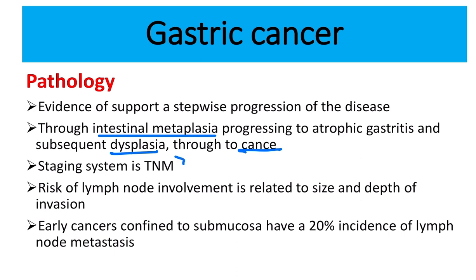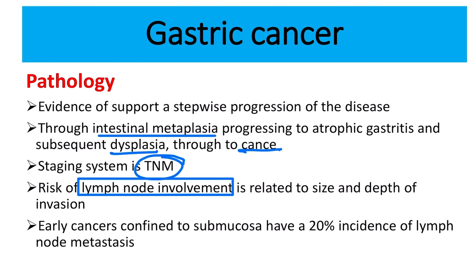It is staged by the TNM system and the risk factors involve lymph node involvement. Almost all types of cancer drain into lymph nodes. Treatment and prognosis actually depend on lymph node involvement. For early cancer confined to the submucosa, there is a 20 percent incidence of lymph node metastasis.